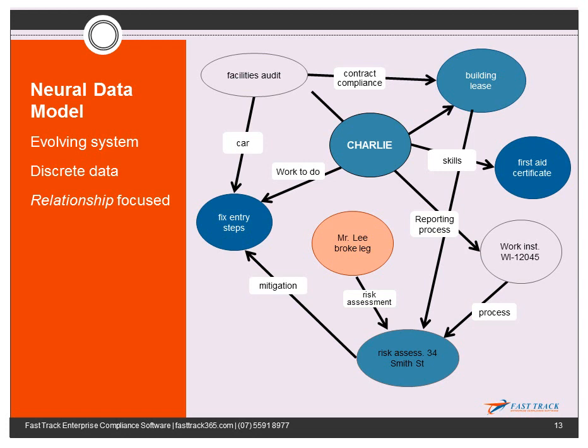So for instance, if you start here with Charlie and follow the path through to the property he is responsible for, we get to the point where we see Mr. Lee had an accident and broke his leg at that property.